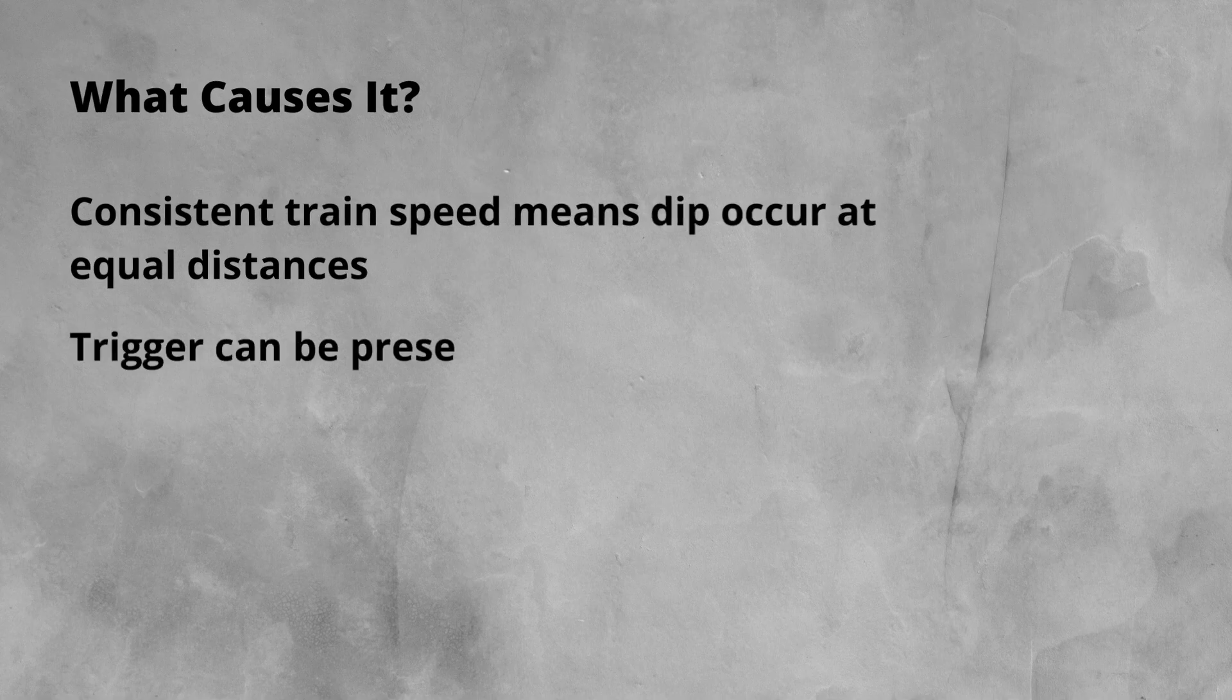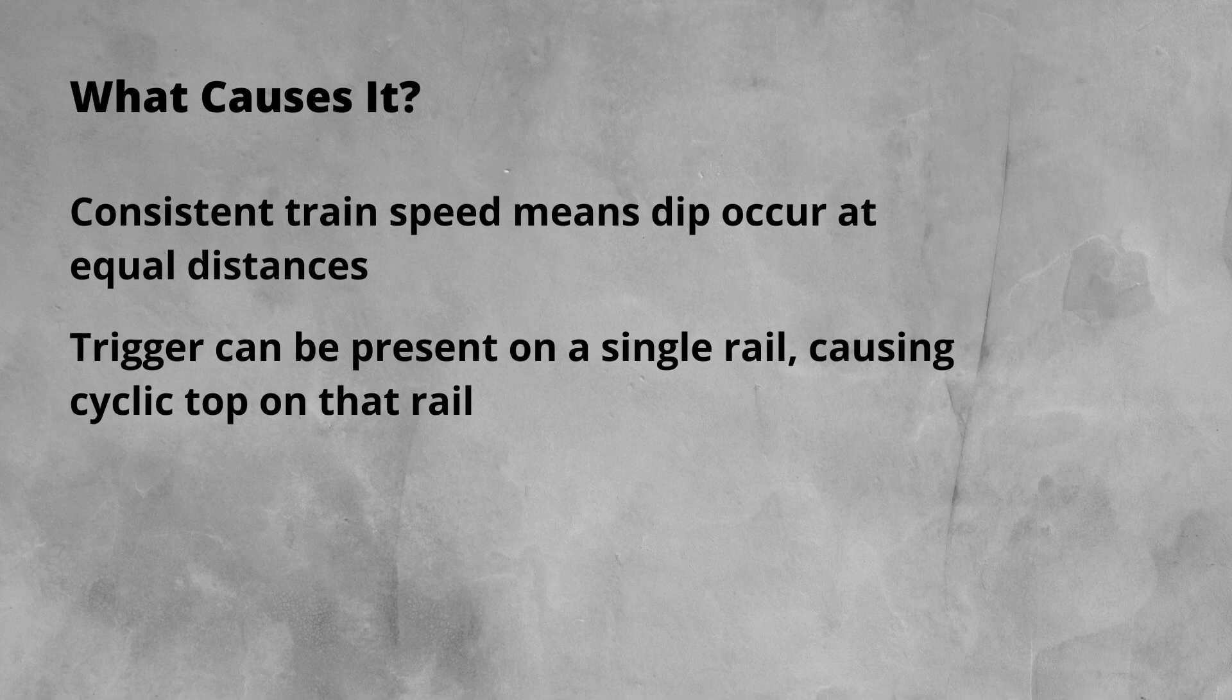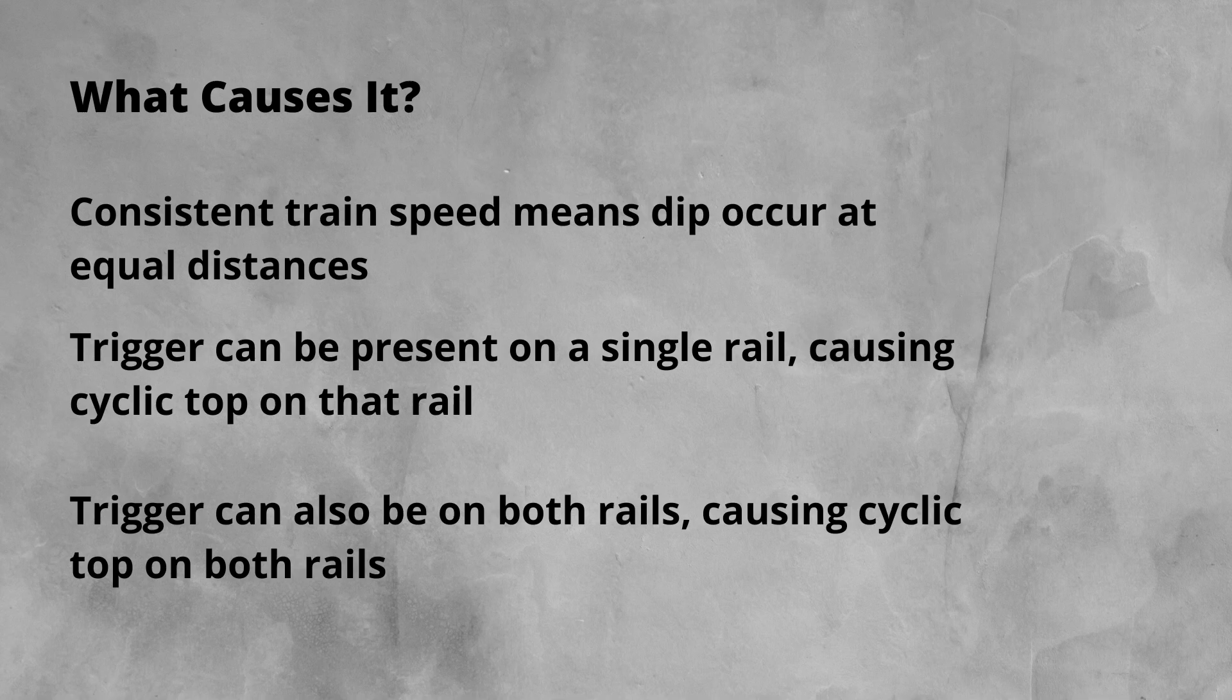If a trigger is only on one rail, a cyclic top fault can occur on that single rail. Whereas if it's on both rails, the cyclic top will form and propagate on both rails.